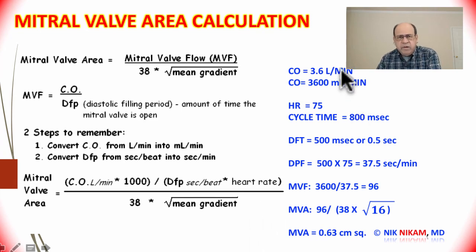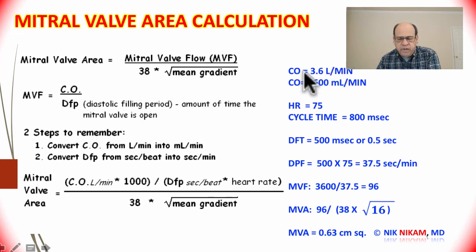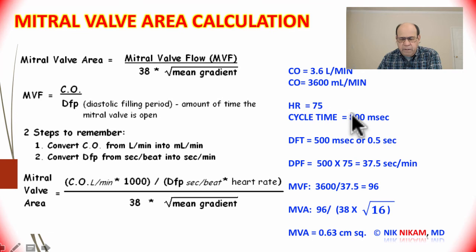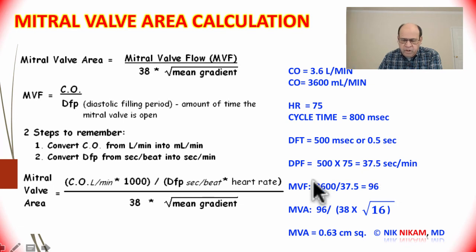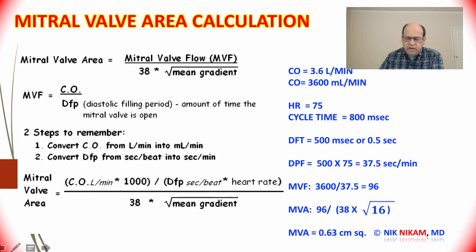In a different example, we have a much lower cardiac output of 3.6 liters per minute, keeping all other parameters the same — heart rate and diastolic filling period unchanged. The mitral valve flow is 96. Dividing by the same formula with the same pressure gradient of 16 mmHg gives a mitral valve area of 0.62 centimeters squared.